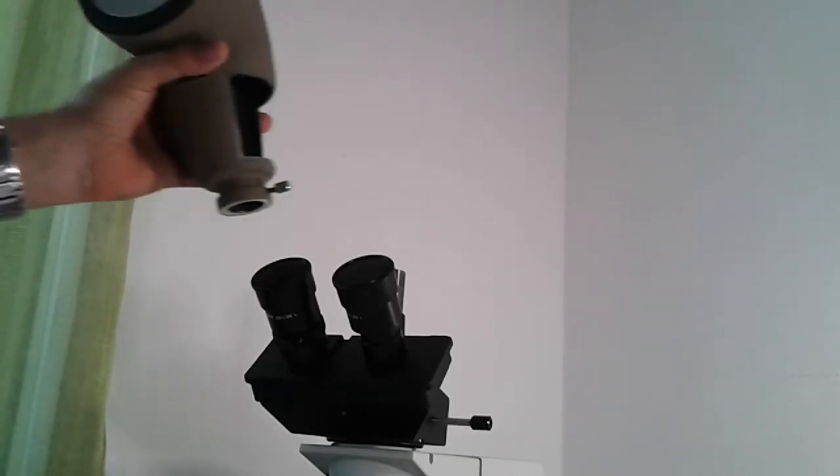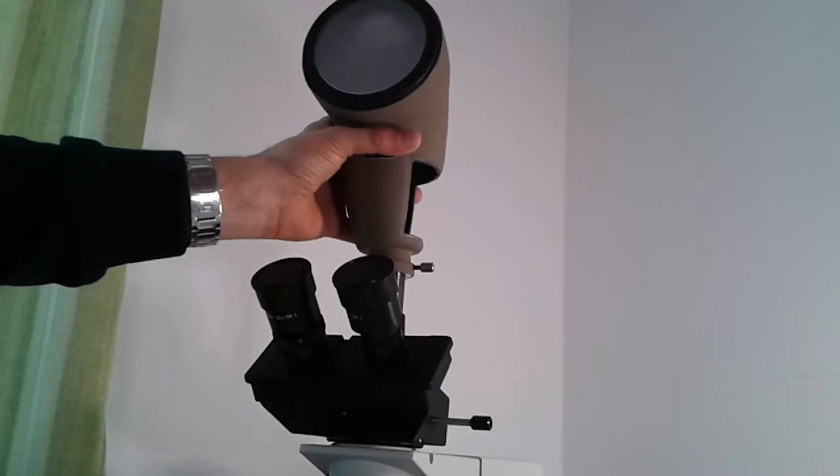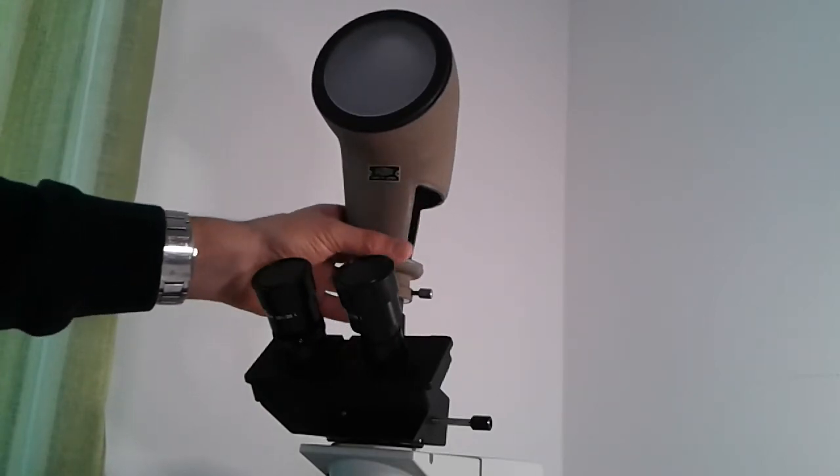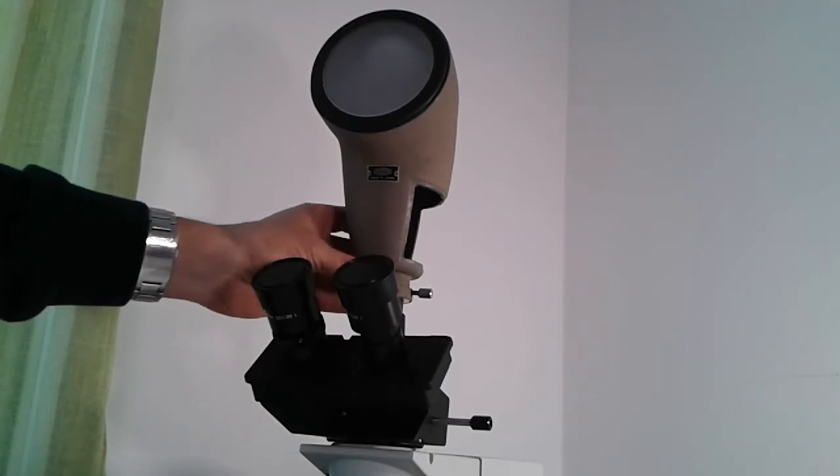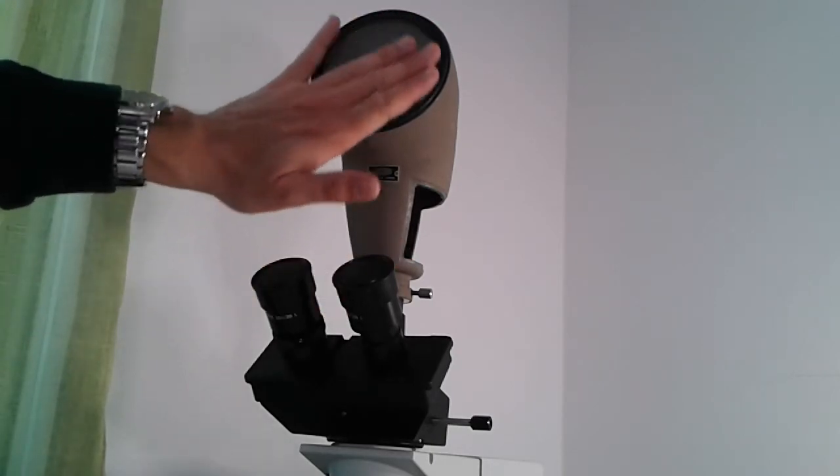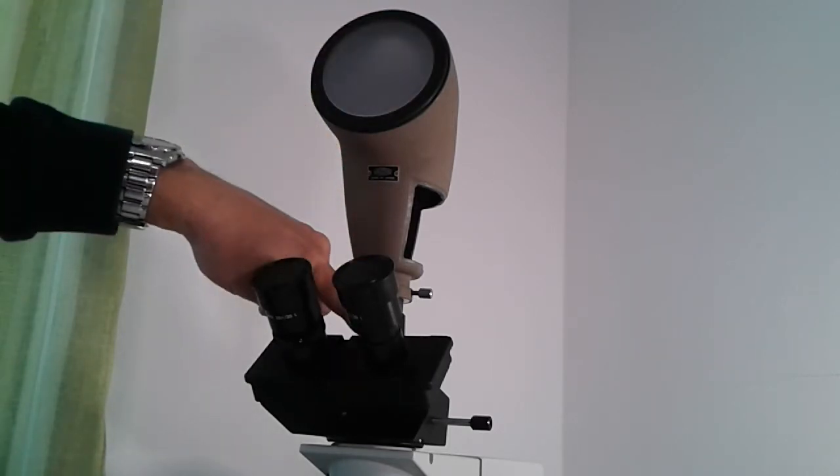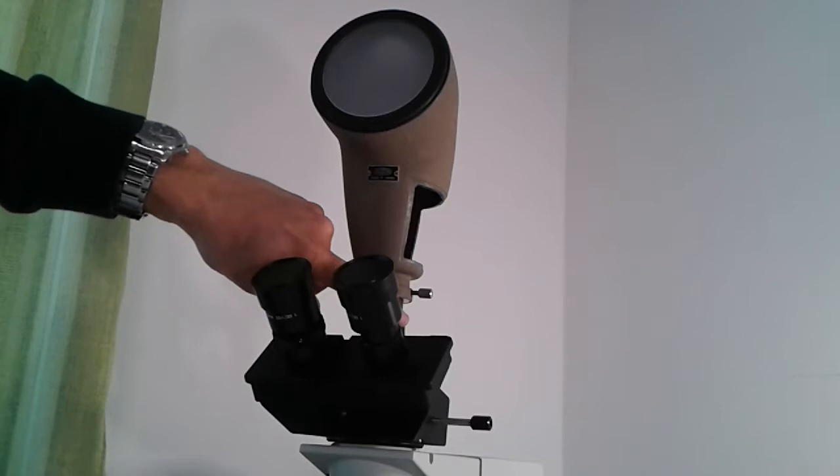This happens to be a viewing screen that you can put on the photo tube on the trinocular head. It allows you to view whatever you're looking at on the screen here using the light that goes through the photo tube.